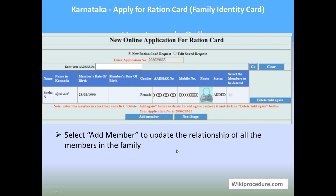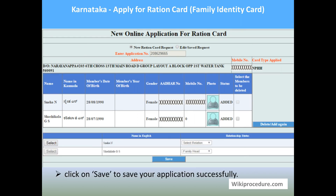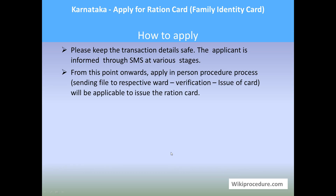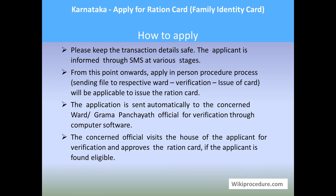If you want to delete any members included wrongly, you can use the delete option as well. Once you have added all required members and everything looks correct, hit 'Next Stage' so that you will be taken to the final phase of the application process — that is, to save the application. Hit 'Save' so that your online application will be saved. Once it is saved, you will get a transaction ID on your mobile number. Please keep it safe.